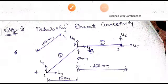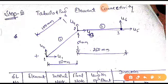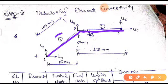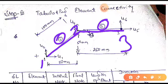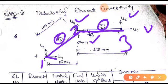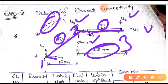For example, consider a two-bar truss element. The first element is connected between node 1 and node 2, and the second element is connected between node 2 and node 3. The displacements are u1, u2 at node 1; u3, u4 at node 2; and u5, u6 at node 3. The length of the first element is 100 mm and the length of the second element is 250 mm.